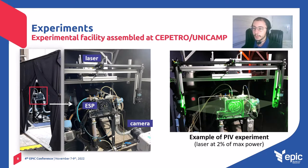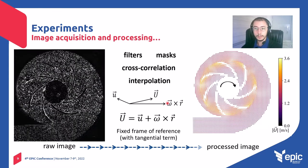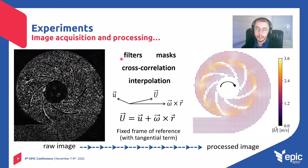This is an example of a PIV experiment. As you can see, the pump is illuminated from both sides by the laser. Then images are captured, as this example here on the left. In this raw image, the little white dots are basically the particles reflecting the light from the laser to the camera sensor. When we capture raw images, we need to apply a processing procedure, which is basically composed of filters, masks, cross-correlation, and also interpolation.